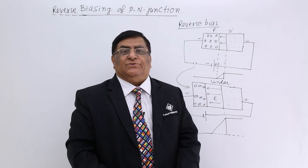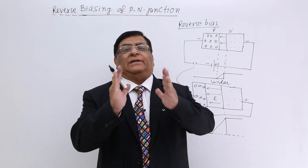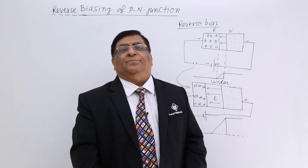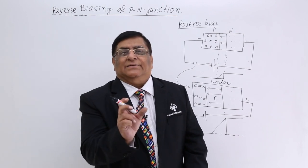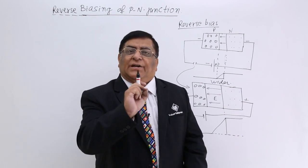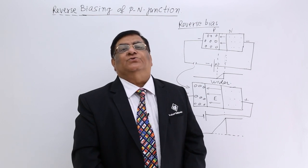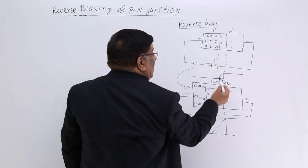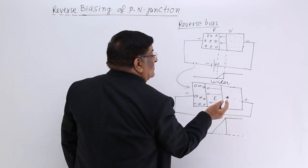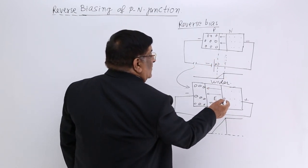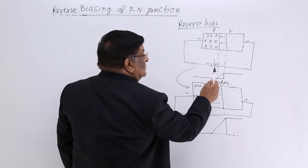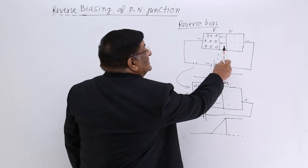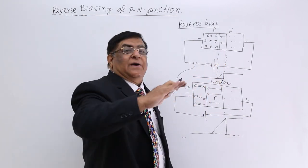What happens to the depletion layer? In reverse bias, it gets wider. The depletion layer represents resistance — it is the layer in which there are no charge carriers. So current cannot pass through it; it has to jump across. If the depletion layer has become wider, it has become more difficult for electrons to jump, so the resistance has increased and the chances of current flowing have become less.